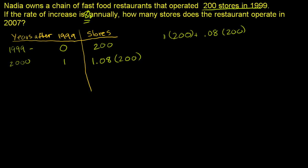Then in 2001, what's going on? This is now two years after 1999. You're going to grow 8% from this number. So you're going to multiply 1.08 times that number, times 1.08 times 200. I think you get the general gist.